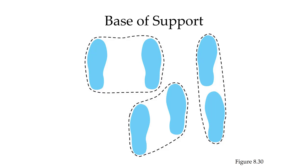During quiet standing, we only have two feet in contact with the ground. So the perimeter that's being drawn around the two feet is going to equal the base of support. Notice that different stances are going to have different widths or lengths of the base of support depending on which dimension we're talking about.